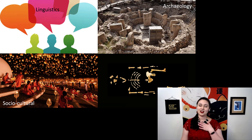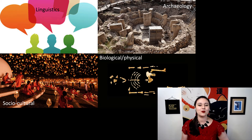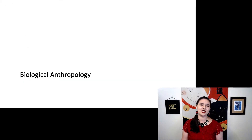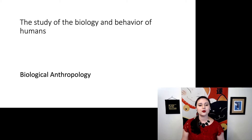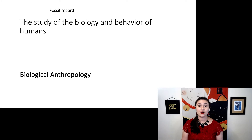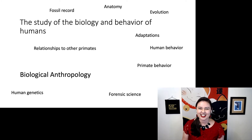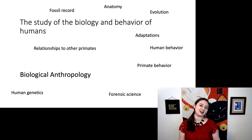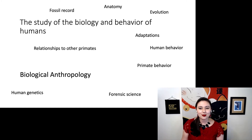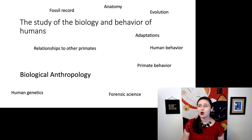And the last one, the one that we're going to be talking about today, is biological anthropology, sometimes called physical anthropology. Biological anthropology is looking at humans through the lens of biology — we're looking at behavior and anatomy. Some people look at the fossil record, others look at the anatomy of modern humans. We can look at how we evolved, what our adaptations are, and what our behavior is.